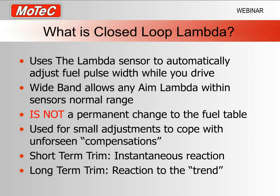The function uses two trims. The first is the short-term trim — this is an instantaneous reaction. If the closed-loop lambda function works out there's a difference between the actual lambda from the sensor and the aim lambda from the table, it instantly reacts and modifies the fuel pulse width based on a few parameters, instantaneously trying to eliminate that error and get the actual lambda to meet our aim table.